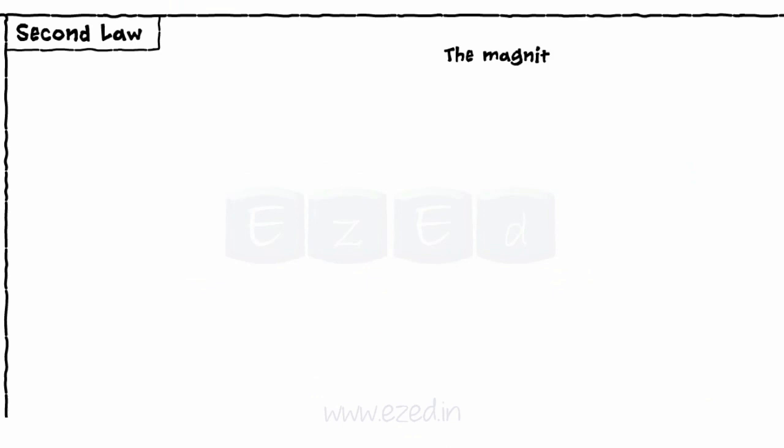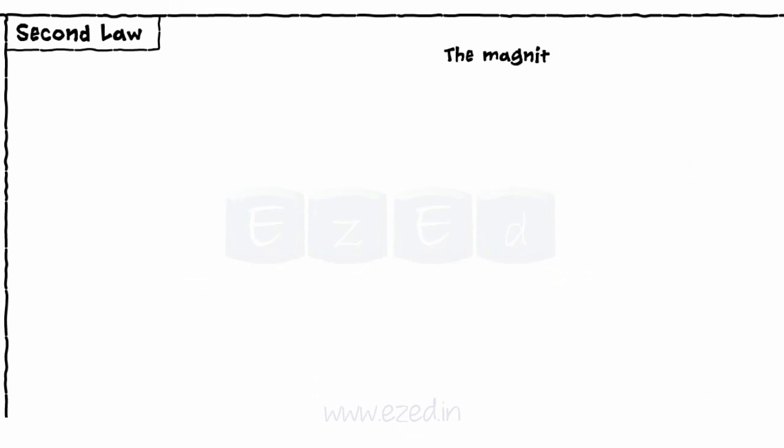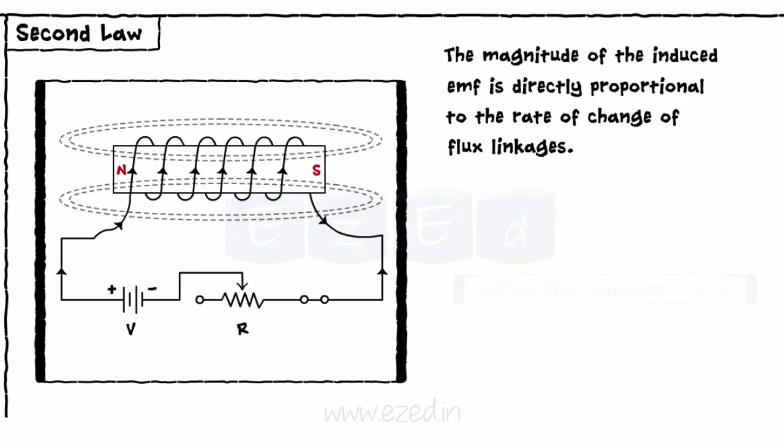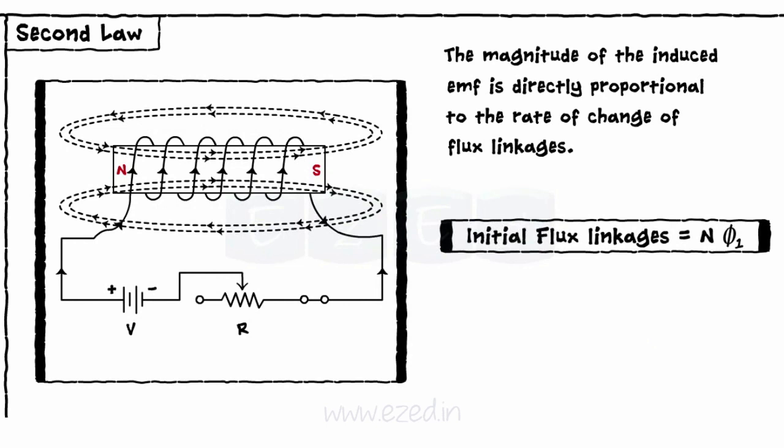Faraday's second law states that the magnitude of the induced EMF is directly proportional to the rate of change of flux linkages. Consider the coil having N turns. The initial flux linked with the coil is phi 1. During time t, let's say that flux changes from phi 1 to phi 2. Hence, the rate of change of flux becomes N into phi 2 minus N into phi 1 upon t.